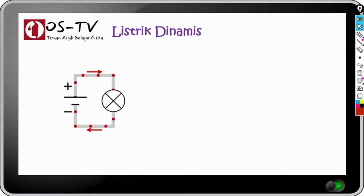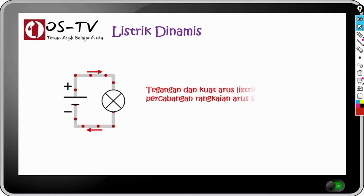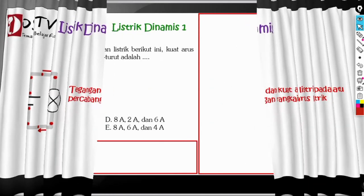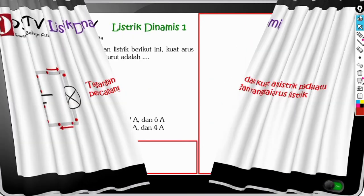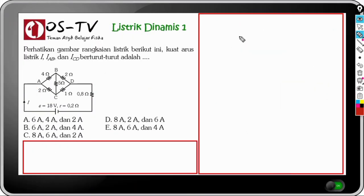Sekarang kita lanjutkan pada pembahasan soal-soal tentang listrik dinamis. Soal-soal tentang listrik dinamis yang sering keluar dalam UTBK SBMPTN umumnya berkaitan dengan tegangan dan kuat arus listrik pada suatu percabangan rangkaian listrik DC. Mari kita bahas beberapa contohnya. Kita mulai dari soal nomor 1: perhatikan gambar rangkaian listrik berikut ini.